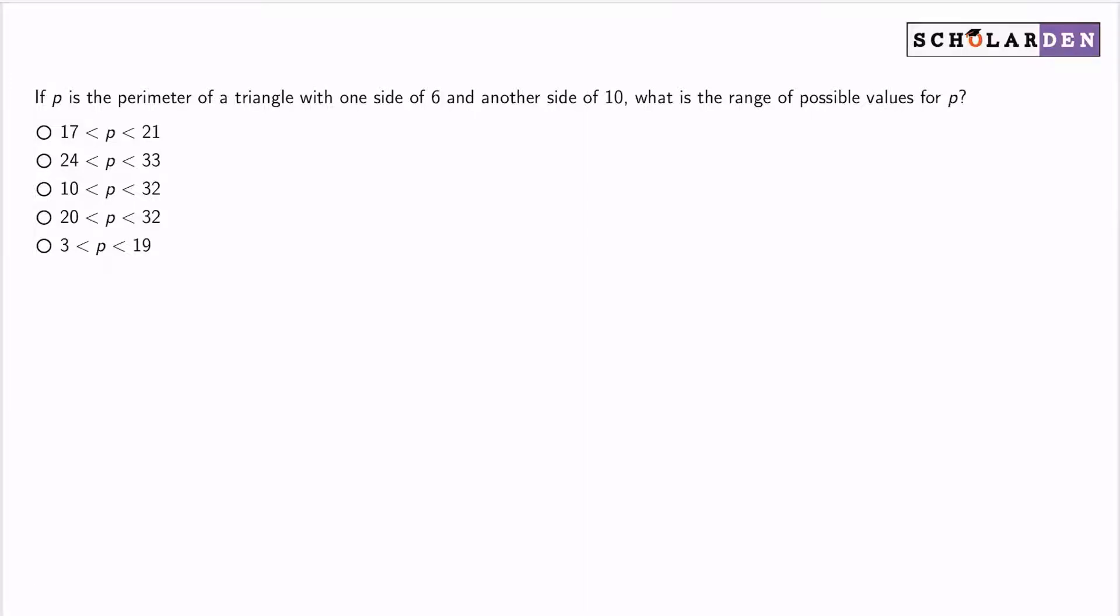Hey, welcome back. If P is the perimeter of a triangle with one side of 6 and another side of 10, what is the range of possible values for P?